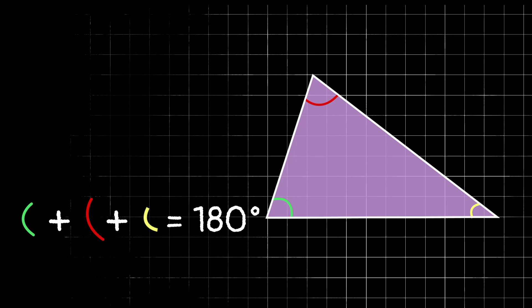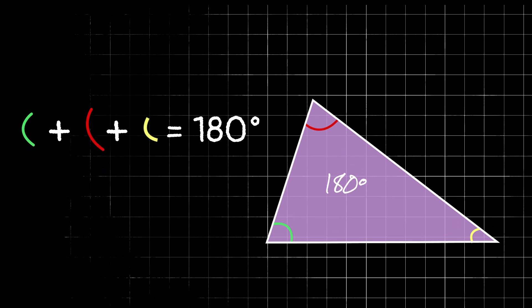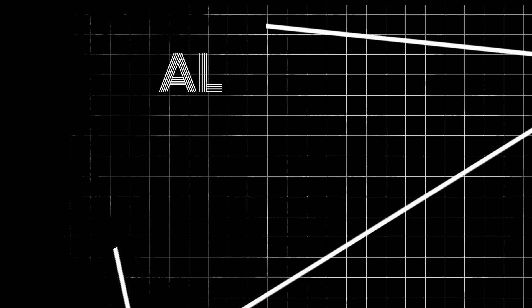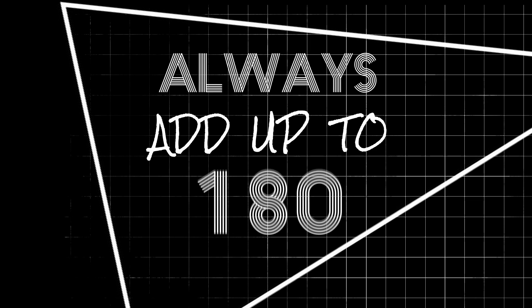And we know that green plus red plus yellow equals 180, so all three angles inside of our triangle add up to be 180 degrees. So that's why all of the angles in a triangle always add up to be 180 degrees.